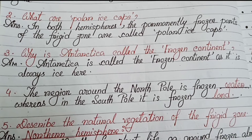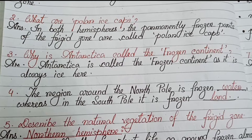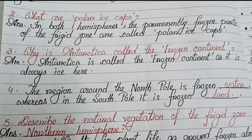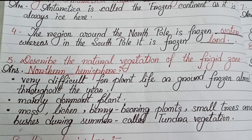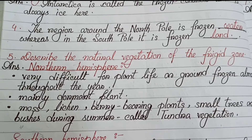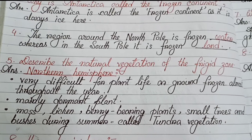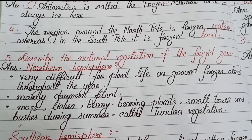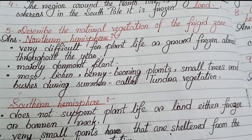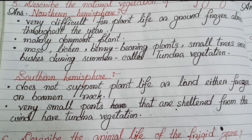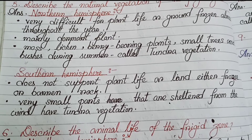Number four (fill in the blank): The region around the North Pole is frozen water, whereas in the South Pole it is frozen land. Number five: Describe the natural vegetation of the frigid zone. Northern hemisphere — very difficult for plant life as ground is frozen almost throughout the year. Mainly dormant plants, lichen, berry-bearing plants, small trees and bushes during summer, called tundra vegetation. Southern hemisphere — does not support plant life as land is either frozen or barren rock; very small sheltered parts have tundra vegetation.